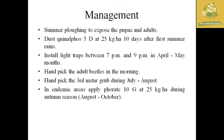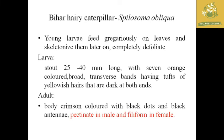For management of white grubs: summer plowing to expose pupae and adults to sunlight, which reduces their count in the field. Dust Quinalphos 5D at 25 kg per hectare, 10 days after the first summer rains. Install light traps between 7 PM and 9 PM in April and May to monitor white grubs. Hand-pick adult beetles in the morning and hand-pick third instar grubs during July and August. In endemic areas, apply Carbofuran 10G at 25 kg per hectare during August to October.